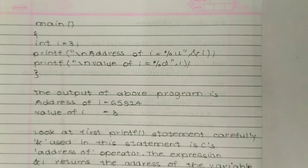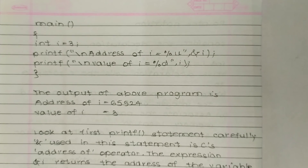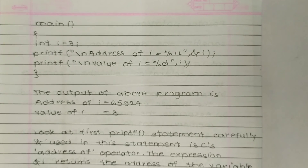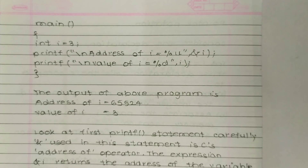The output of the above program is: Address of i = 65524, and Value of i = 3. So we are getting the address of i, which is 65524, and the value stored at that address is 3. We are printing the memory location using the address-of operator. This is a simple example of a pointer.